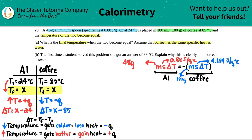Now we're ready to plug everything in. 45 times 0.88 times (X - 24) equals negative—let's put in all those blue values—180 times 4.184 times (X - 85). That's not scary, we got this.